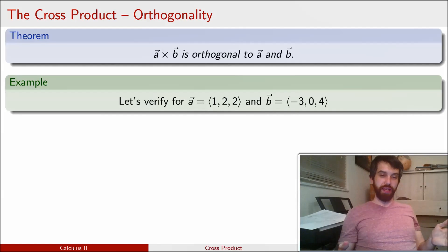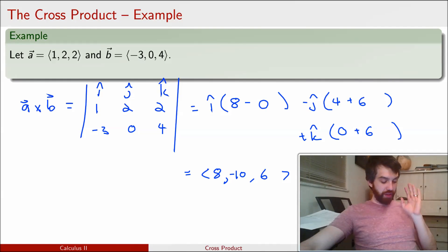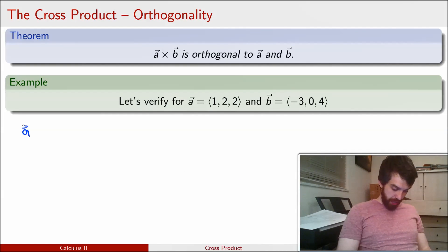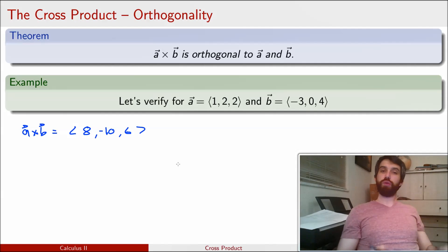So let's check that indeed this property is true for our specific example. This is the a and b from before. And if I go back what we have, the cross product is 8 minus 10, 6. So let me write that down before I forget. a cross b is going to be 8 minus 10, 6. Okay, so I want to show that this cross product is orthogonal to my a and b. And showing something as orthogonal we've seen before is equivalent to saying that the dot product is equal to 0. And if the dot product is 0, my vectors are going to be orthogonal.